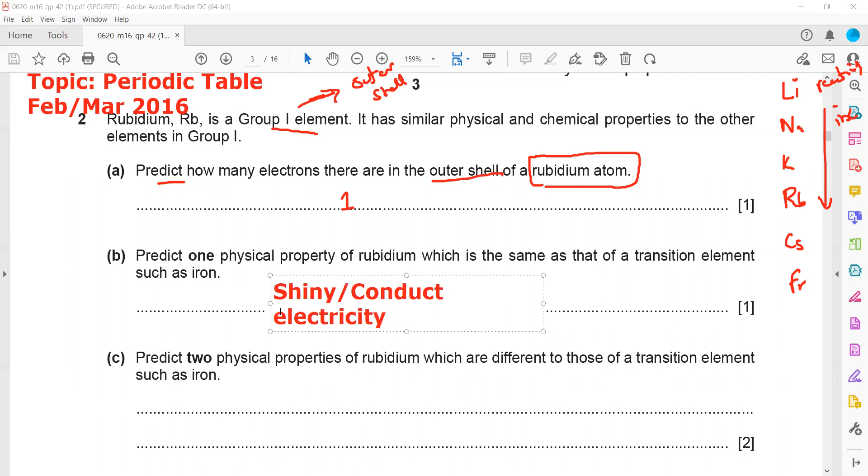Next, predict two physical properties of rubidium which are different to those of transition elements such as iron. The density is different. It will have low density and will be generally soft, whereas transition elements are hard. So these are the two different physical properties.